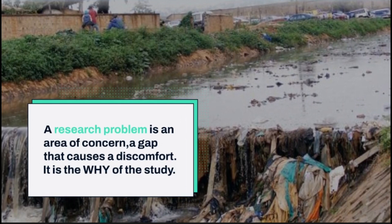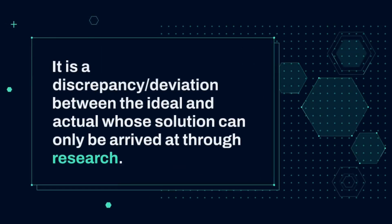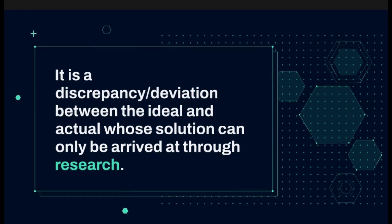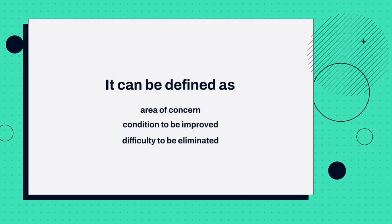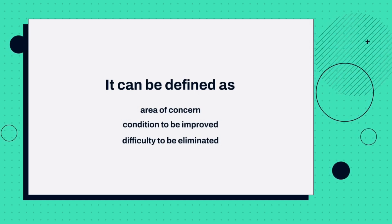A research problem is an area of concern — it is a gap that causes a discomfort to a researcher when he or she asks the question, why. In other words, a research problem is the 'why' of the study. It can also be defined as a discrepancy or a deviation between the ideal and actual whose solution can only be arrived at through research. A research problem is a gap between what is and what ought to be — an area of concern, a condition to be improved, or a difficulty to be eliminated.